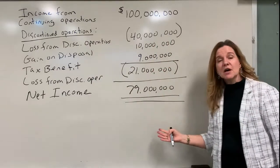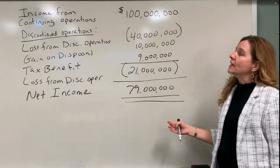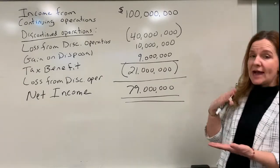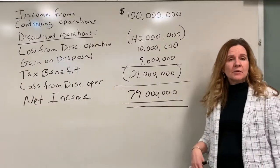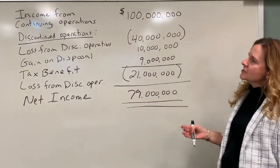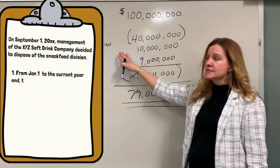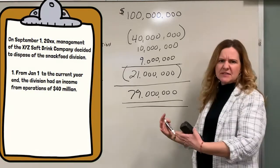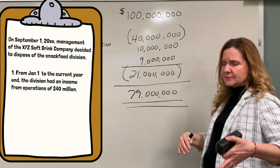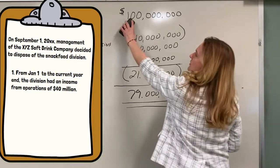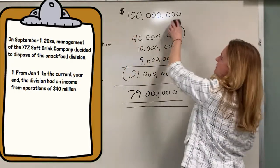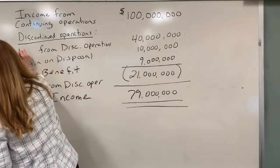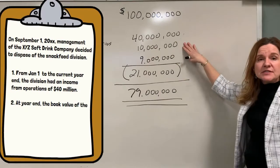That is how it's represented on the income statement when we have a discontinued operation that we actually sold. Now we're going to change the problem: instead of a loss from discontinued operations, we're going to have income from discontinued operations — a positive $40 million from the beginning of the year to the time of disposal. We're changing the title to income from discontinued operations, and keeping the disposal the same.